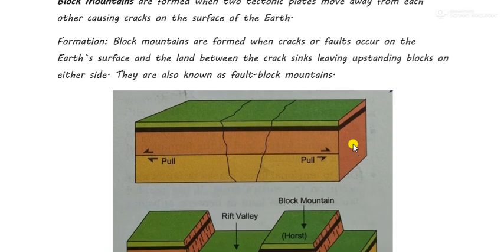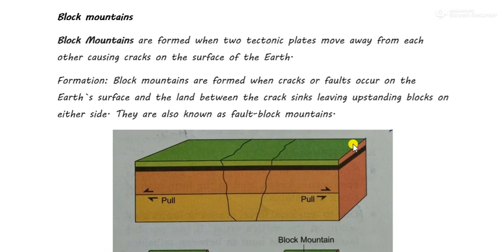Today we are going to study block mountains — what they are and how they are formed. Block mountains are not formed by tectonic plates directly, as tectonic plates are huge. Instead, they are formed from rock beds. When rock beds move away from each other, the land between the two rock beds sinks down.